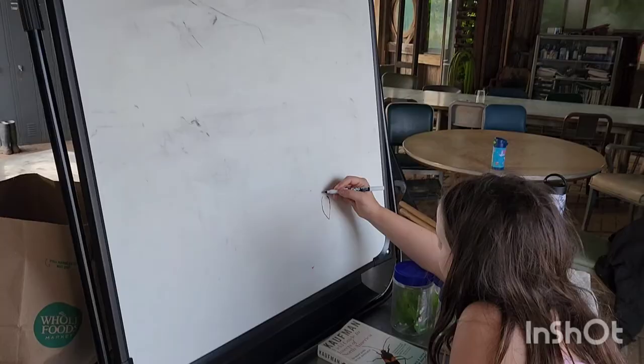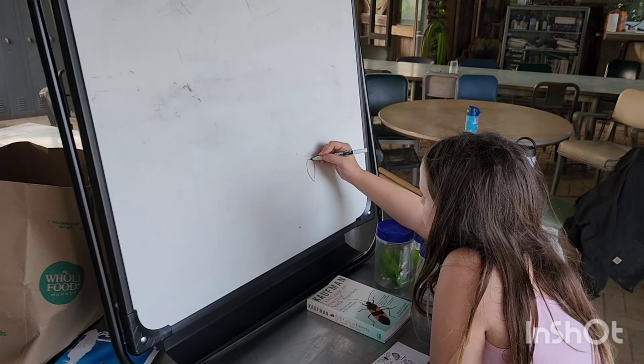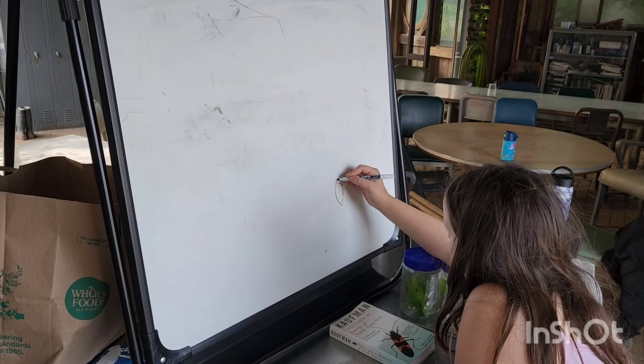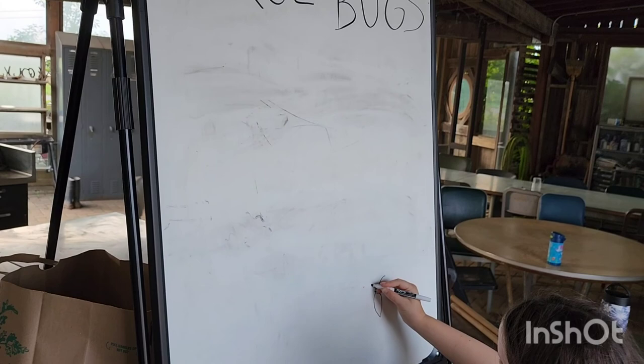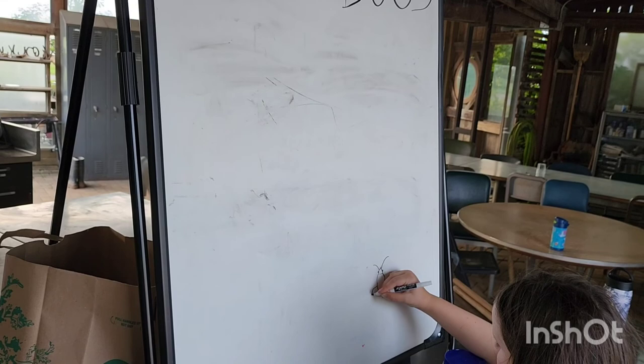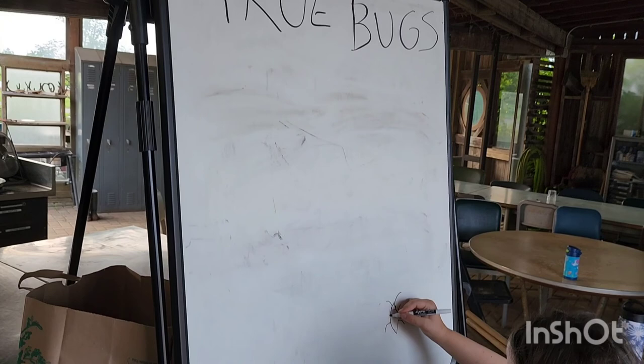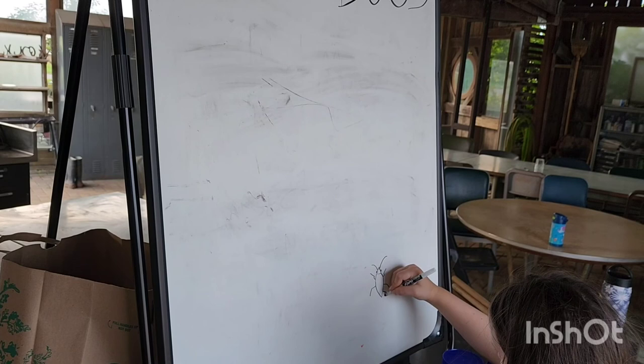We've caught our bugs and now we're coming back to make our presentation. Laura is drawing some of the bugs that she caught, and I'm going to start writing some text up here. This is all meant to be done very quickly — this doesn't have to be a super polished presentation. This is a field presentation. We're just catching things and telling people about them very quickly. The way we're doing it isn't exactly the way your youth need to do it — we're doing it with text and pictures, but you could also use hand gestures or other ways to convey your information.